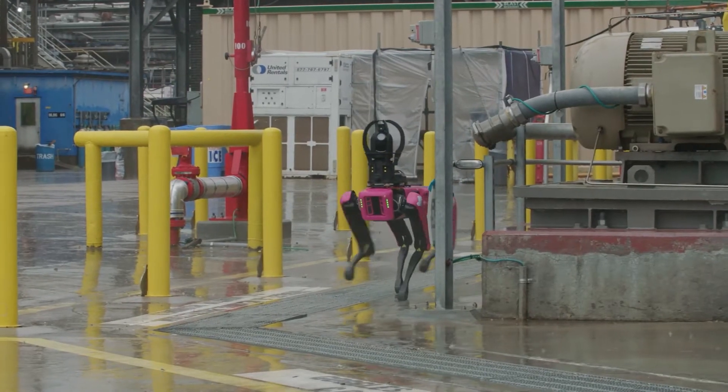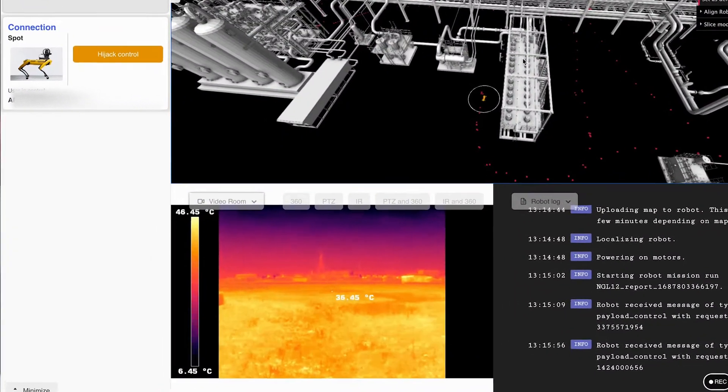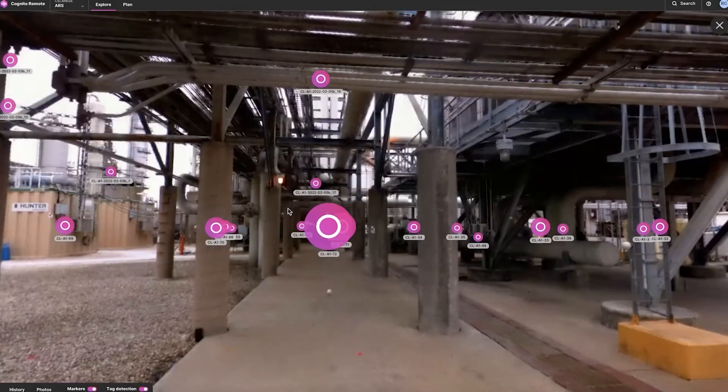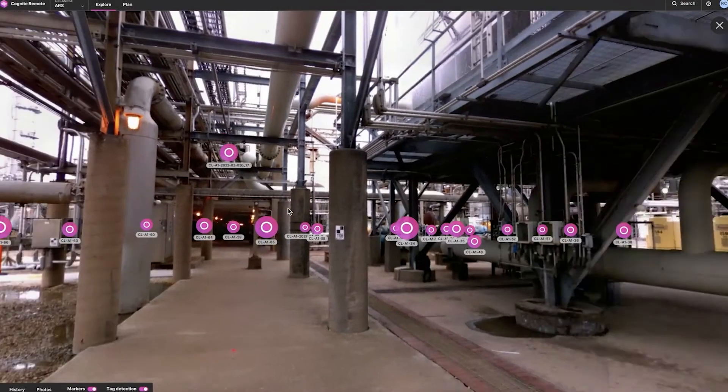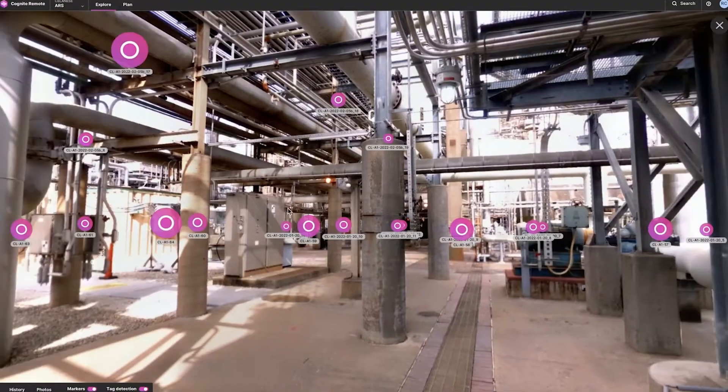With robots, you can capture various types of data like thermal, acoustic, and even 360 degree imagery that allows you to access a dynamic street view of your facility.